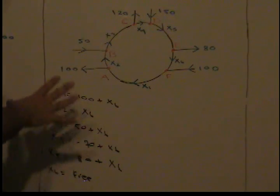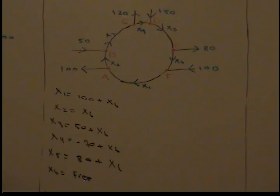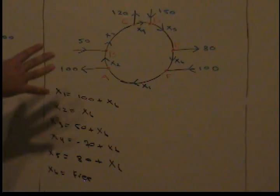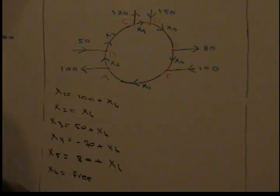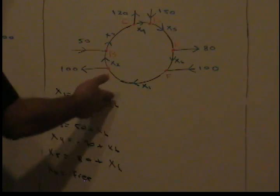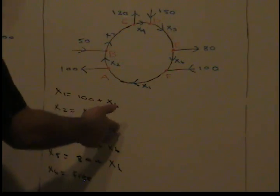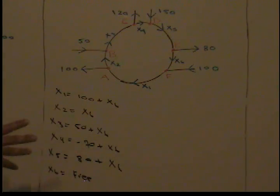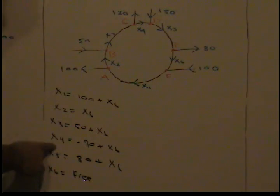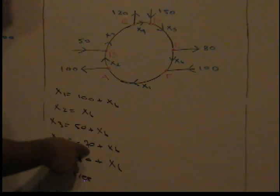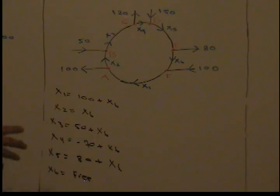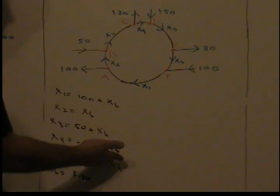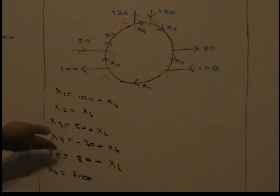It has to be positive. Our x6 is free, so x6 can be anything, but for this particular situation it has to be positive. If you look at each one of these variables, x6 has to equal at least 70, because if you look at x4, which equals negative 70 plus x6—if x6 equals 60, for example, it's going to give us a negative value for x4, and we can't have negative values.